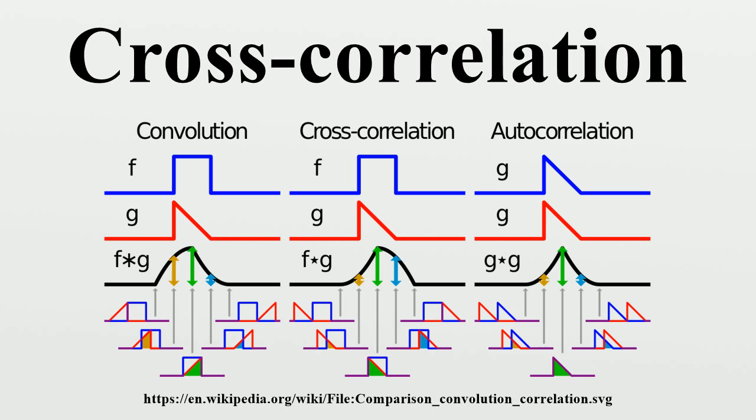the maximum of the cross-correlation function indicates the point in time where the signals are best aligned, i.e., the time delay between the two signals is determined by the argument of the maximum, or ARG max of the cross-correlation, as in normalized cross-correlation.